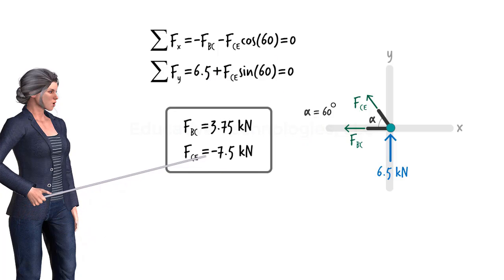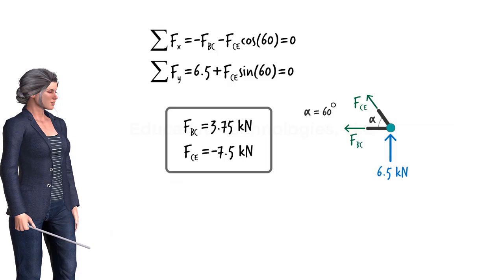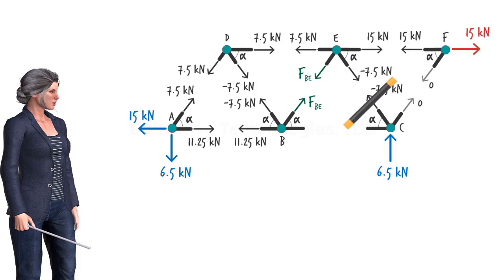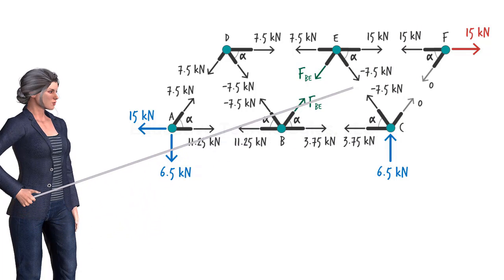Given the negative sign here, we know that member CE is in compression, carrying a force of 7.5 kilonewtons. We keep the direction of the force as is, and write negative 7.5 kilonewtons as its magnitude, indicating the compressive nature of the force.